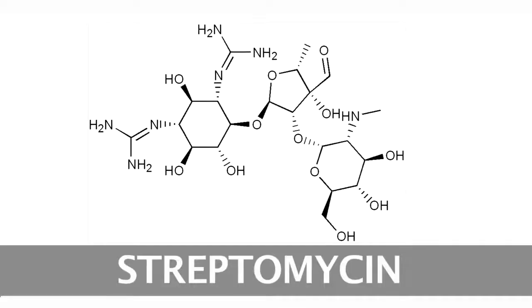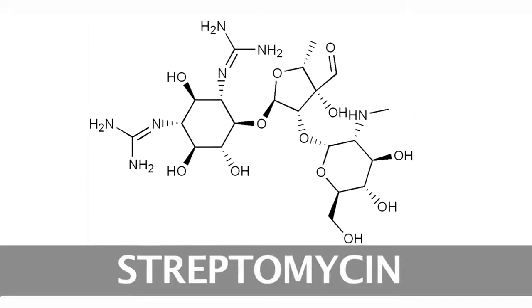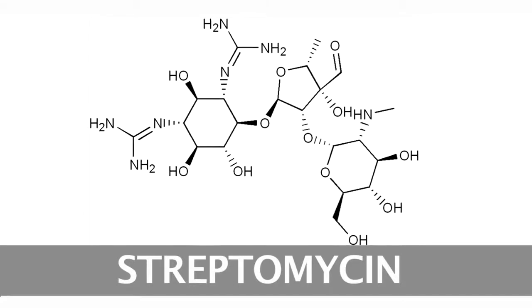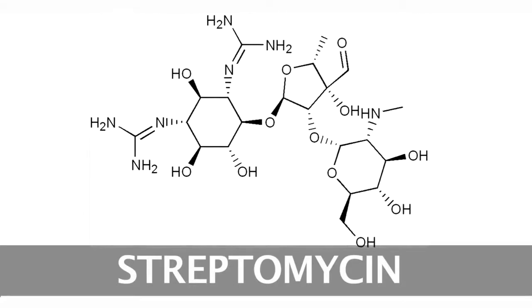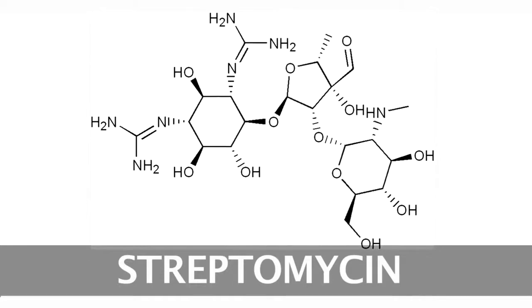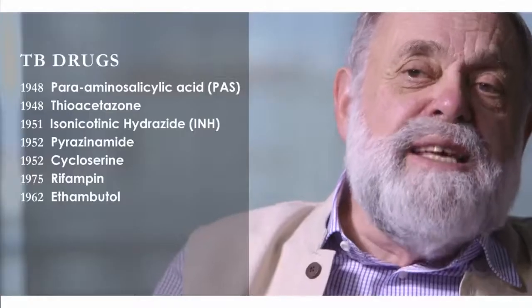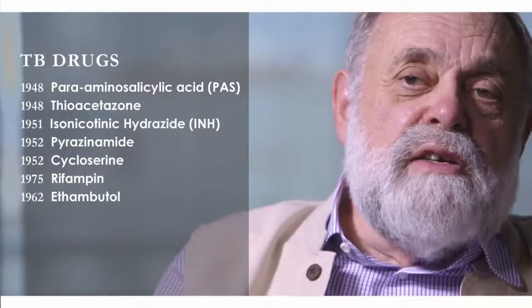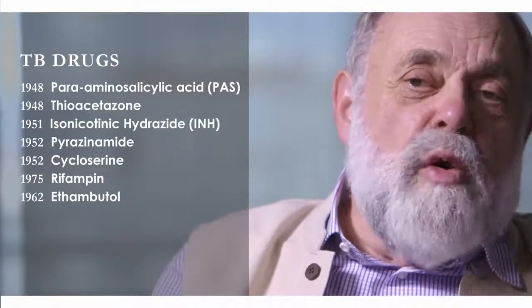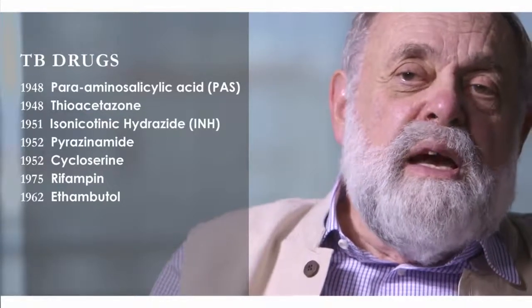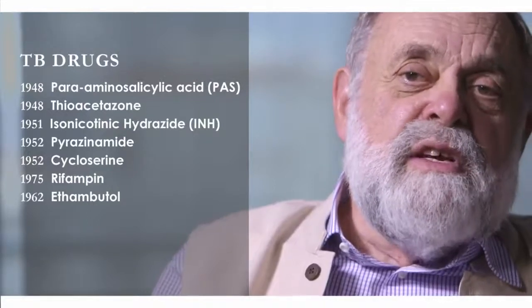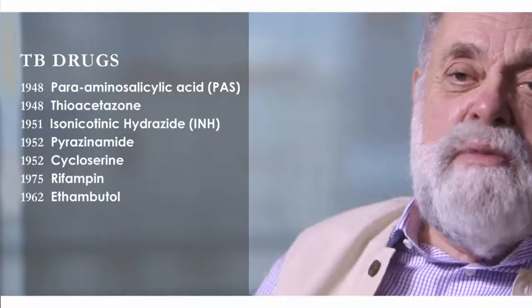The first antibiotics go back to the late 1930s with sulfonamides. Here is streptomycin — developed in 1943 by Selman Waksman and first given to patients in 1944 for tuberculosis. You can see from this list of tuberculosis drugs that at least seven — and there are many more, actually — have been developed since the first discovery of streptomycin.